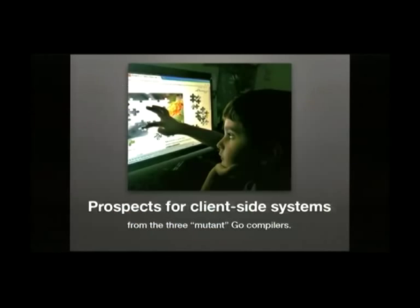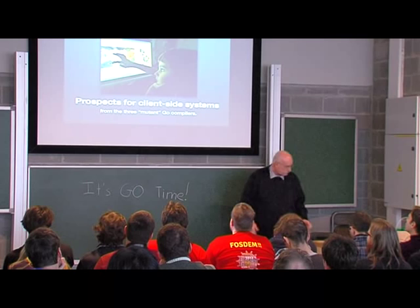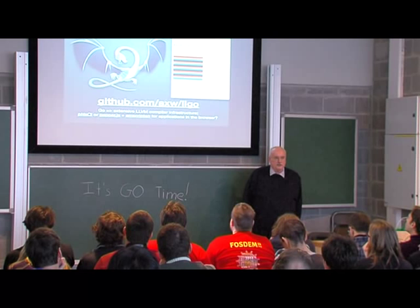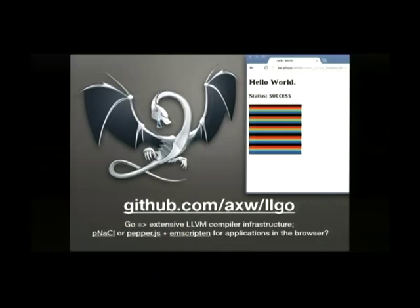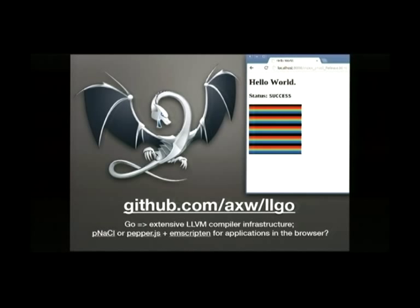Let's talk about the prospects on the client side for each of these, since that's where I started. For LL Go, it's got to the point where it can create a native client Hello World program — it's importable as NaCl. Unfortunately it hasn't got much further yet, it's very close. The prospects for LL Go are that you'll be able to run at almost native speed inside Chrome in emulated mode using Emscripten and Pepper.js. So it should become a viable way to run very fast code in the browser.